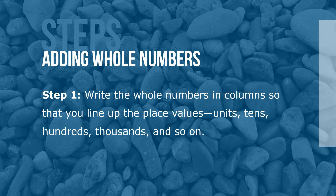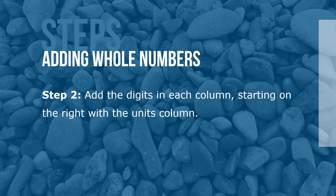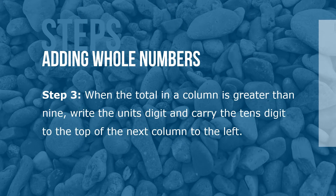Here are the steps for adding whole numbers. Step 1: Write the whole numbers in columns so that you line up the place values — units, tens, hundreds, thousands, and so on. Step 2: Add the digits in each column, starting on the right with the units column. Step 3: When the total in a column is greater than 9, write the units digit and carry the tens digit to the top of the next column to the left.